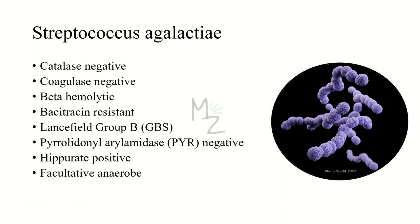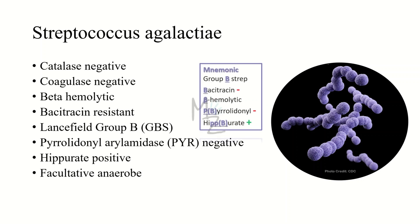Streptococcus agalactiae is PYR negative. PYR is a short form of pyrrolidonyl arylamidase — a qualitative procedure for determining the ability of streptococci to enzymatically hydrolyze L-pyrrolidonyl beta-naphthylamide. Streptococcus agalactiae is hippurate positive. Hippurate or hippuric acid is a carboxylic acid and organic compound found in urine, formed from the combination of benzoic acid and glycine. This bacterium is also facultative anaerobic.